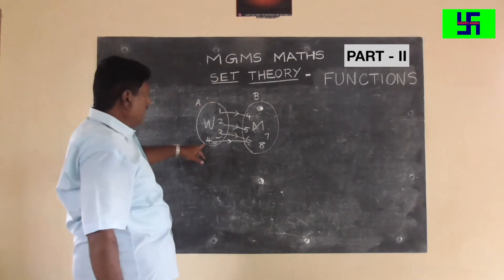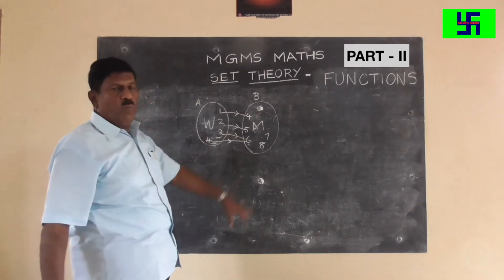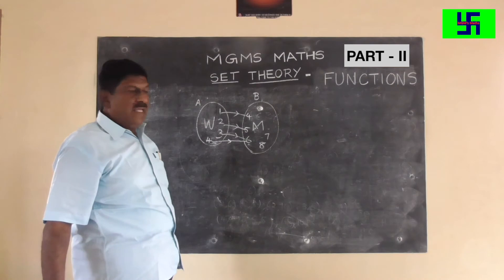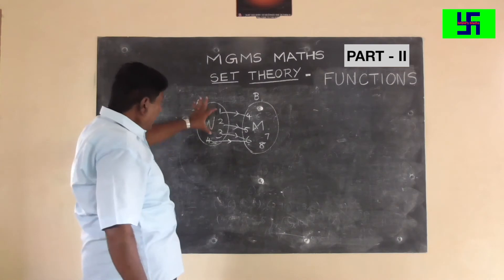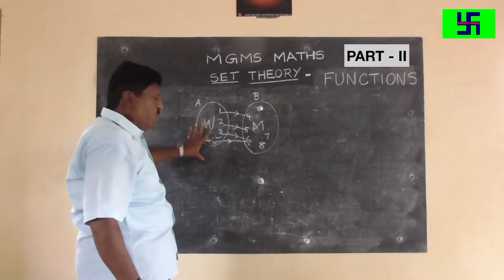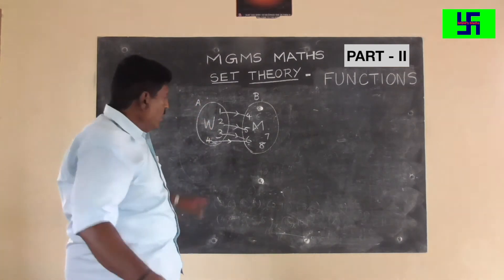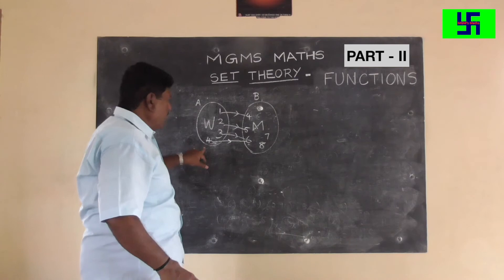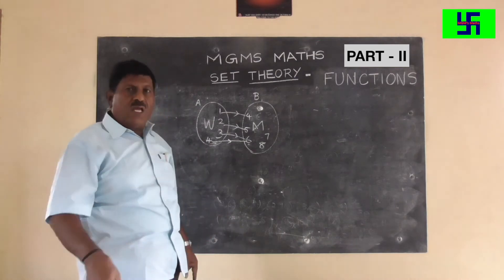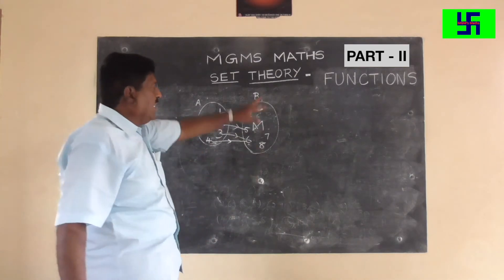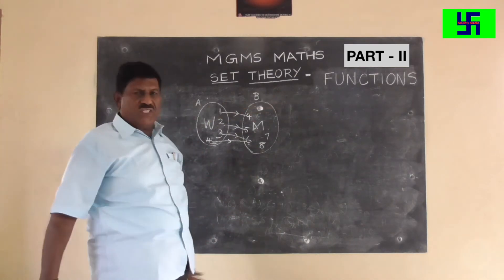But a woman cannot have two men. Each element of set A should be mapped, and no element should be left without a mapping. That is called a function.